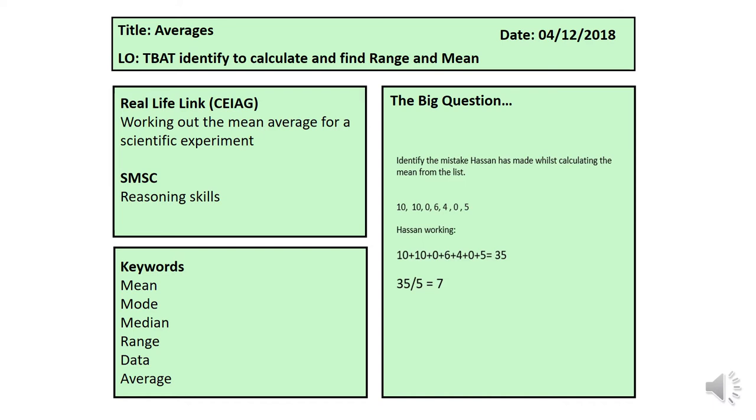The keywords for today are mean, median, mode, range, and average. The real-life link is for scientific experiments for finding the average, and for range would be in the general census which the government sends out to your families' homes to find out general information for ages in households.